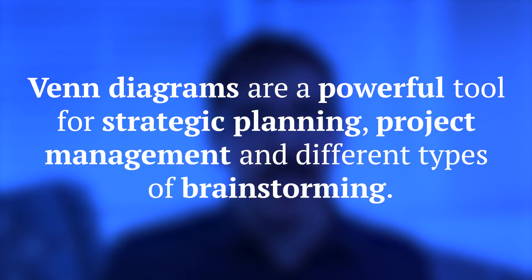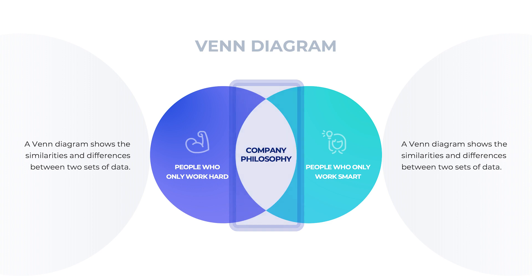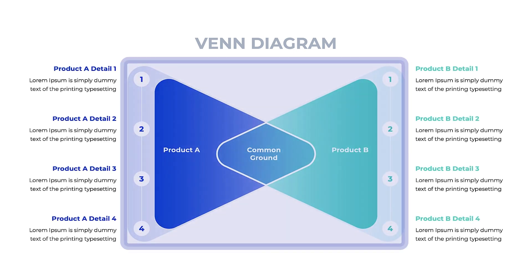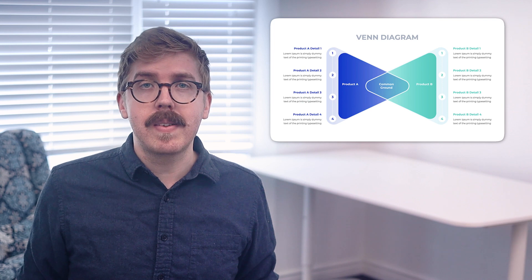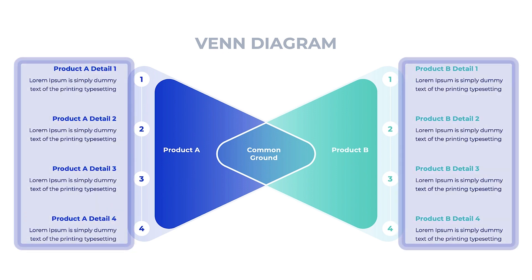Venn diagrams are a powerful tool for strategic planning, project management, and different types of brainstorming. They can use any number of circles or any other shape. The presentation includes a standard two-set diagram where two sets of data or ideas can be compared — the overlapping area indicates shared traits, while the non-overlapping sections indicate unique characteristics. This can be used to compare products between your company or against a competitor, helping you see how effectively you differentiate. You might also use it to decide between two products, such as a car to purchase, showing which features are exclusive to each and which both share. In this example, text is listed outside the diagram so it's easier to read and doesn't become too cluttered.